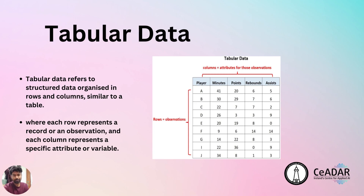Tabular data refers to structured data organized in rows and columns, similar to a table. It is a common format for representing structured information in various fields including databases, spreadsheets, and CSV files. Tabular data is typically used to represent structured datasets where each row represents a record or observation and each column represents a specific attribute or variable. The first row often contains column headers providing labels for each column, while subsequent rows contain data values.